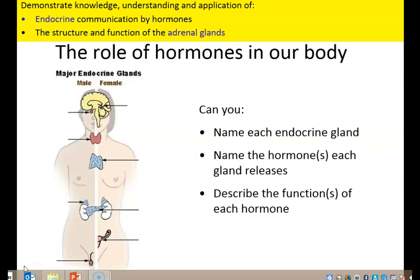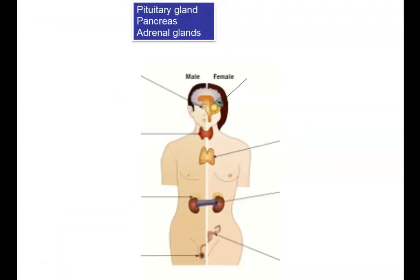You will have studied endocrine glands at GCSE. See if you can remember the names of any of the glands, the hormones that each gland may release, and the function of each one of those hormones. The three glands we are going to look at in more detail over the next few weeks are the pituitary gland, the pancreas, and the adrenal glands. For the other glands, you will still need to know the names of the glands, the hormones they produce, and what those hormones are used for.